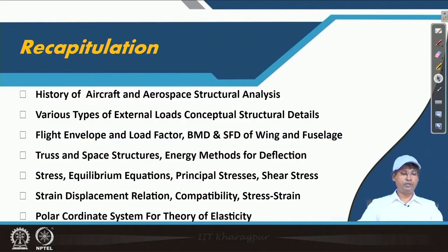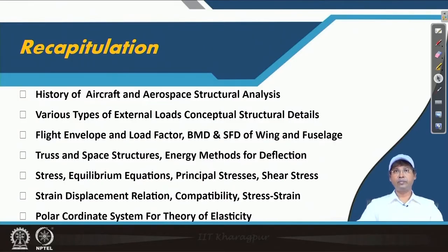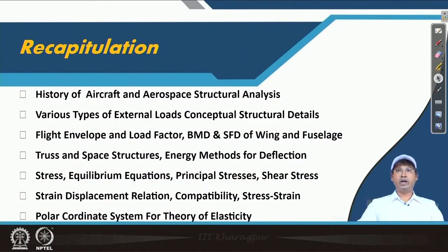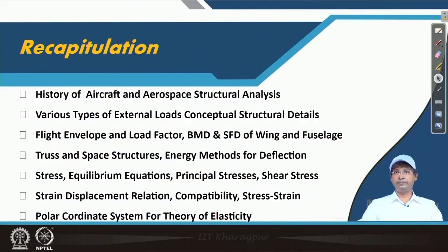The load factor is how many times the gravitational force of earth is encountered by any structure. We have seen in which conditions the load factor becomes higher. We have discussed problems related to bending moment and shear force diagrams of the overall wing and fuselage, and we have come across the unit load method. Unit load method considers unit g, and sometimes a unit force, so that any multiplication of force or g factor can easily give us the desired forces, bending moments, and shear forces encountered by the wing and fuselage.